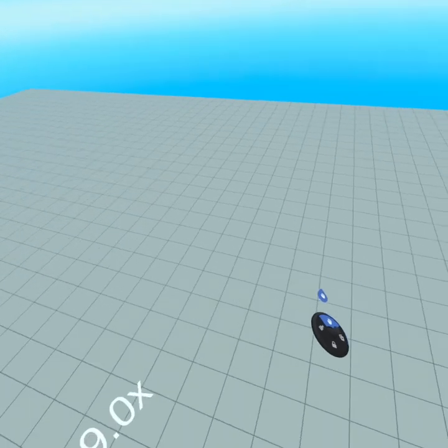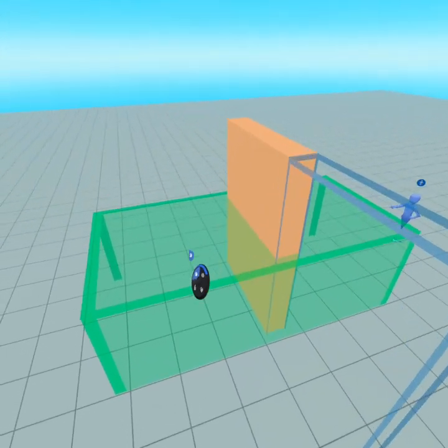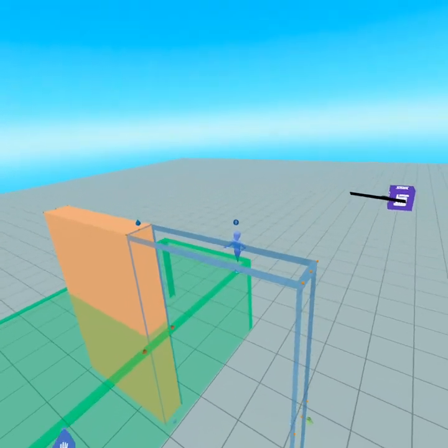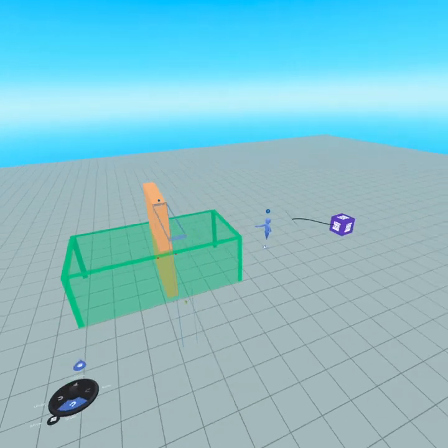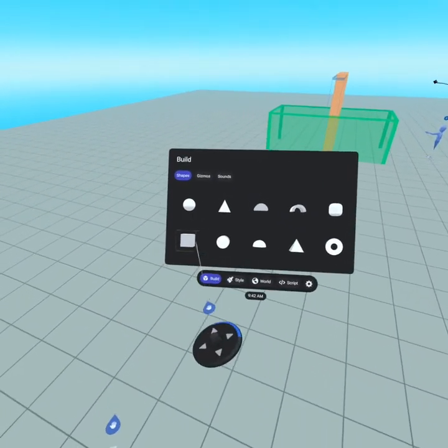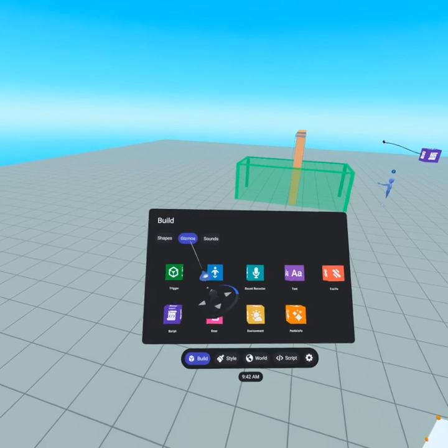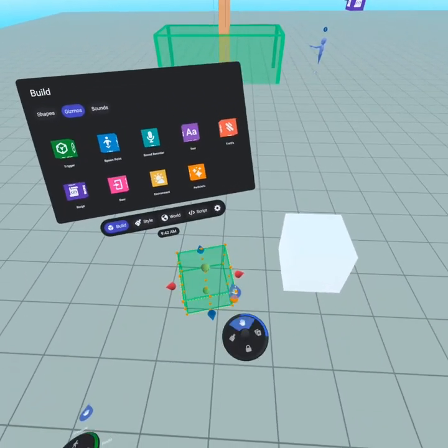The first thing we're gonna do is go into build mode. We need to make a trigger and a door with an invisible hinge. We're gonna grab a simple block and go to our gizmos tab and grab a trigger.